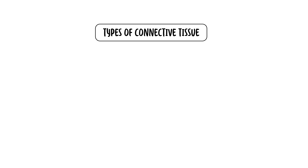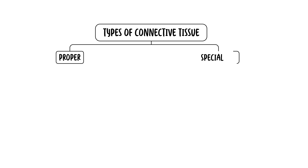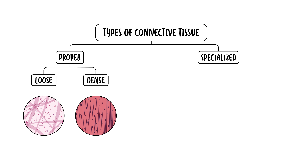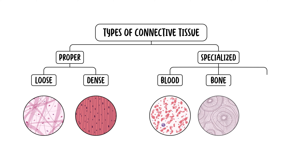Based on the cells present and the extracellular matrix structure, we can distinguish two types of connective tissue: connective tissue proper and specialized connective tissue. Connective tissue proper can be further divided into loose connective tissue and dense connective tissue. Specialized connective tissue includes blood, bone, and cartilage.